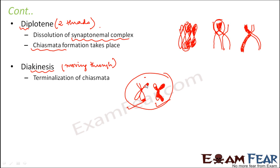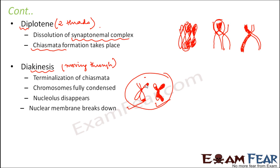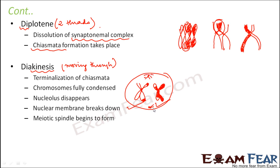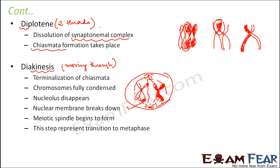With this stage, prophase 1 ends. Here the chromosomes again get fully condensed. The nucleolus disappears and the nuclear membrane breaks down — these things happen which are common to prophase. The meiotic spindle will begin to form, meaning the centrioles will move towards opposite poles and start to form the spindle. You will find the process quite similar to mitosis at this point. This transition presents the move to metaphase — as soon as the spindle starts forming, it indicates that metaphase is approaching.